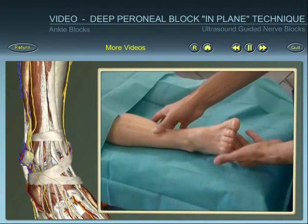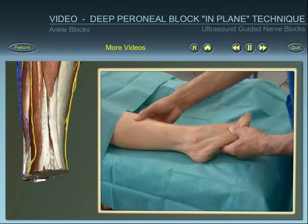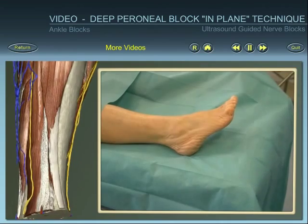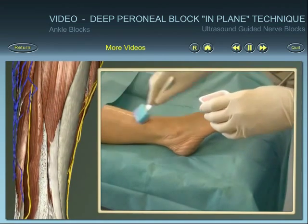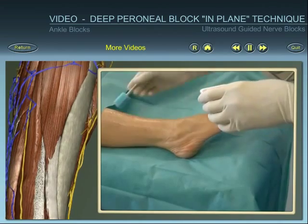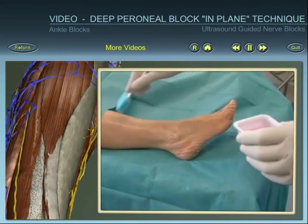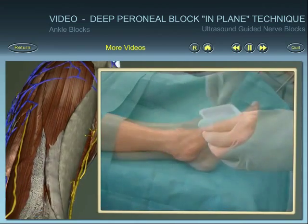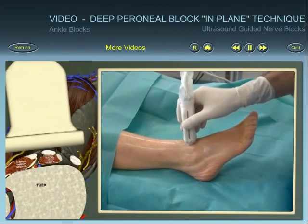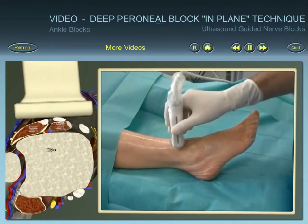Position the patient and identify superficial landmarks. After skin disinfection and using an aseptic technique, place the ultrasound probe. Align, rotate and tilt the probe to obtain the best view of the deep peroneal nerve.